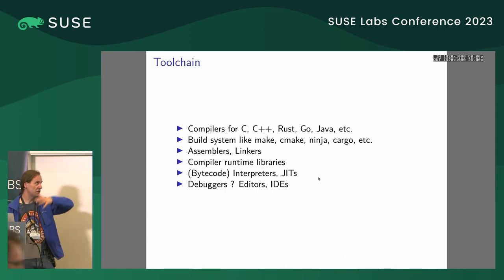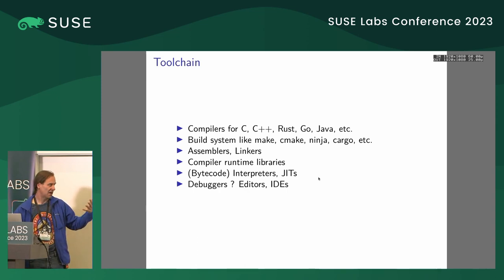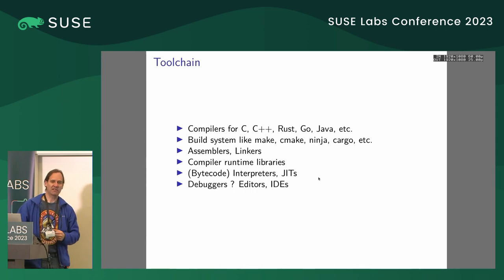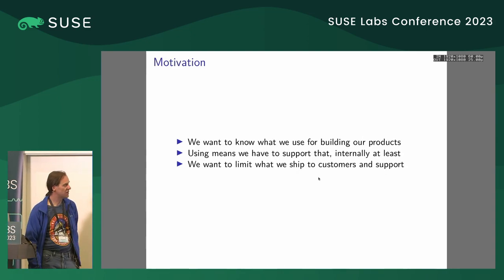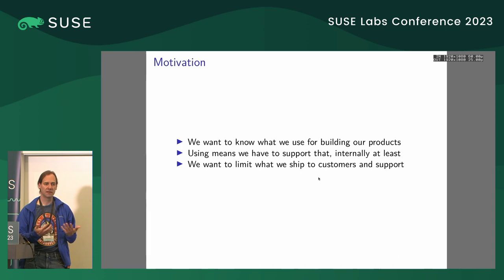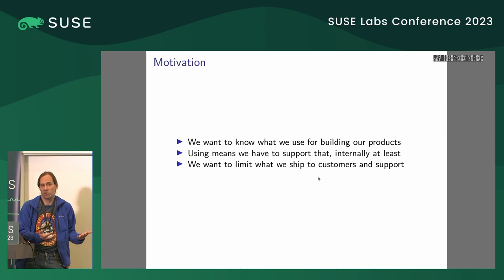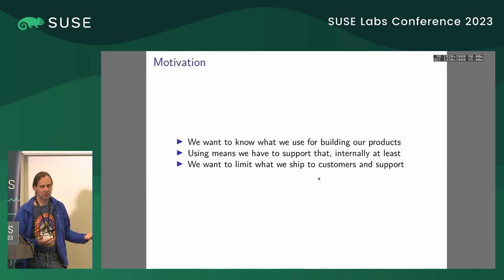We actually have pieces of all of this in our older products like SLEE 15, and we want to know what the state is on ALP. One of the motivations is that we want to really know what we are using to build our product, because what we are using there, we have to at least support internally, hopefully, if it breaks. We also want to know what part of the toolchain we actually ship to the customer.